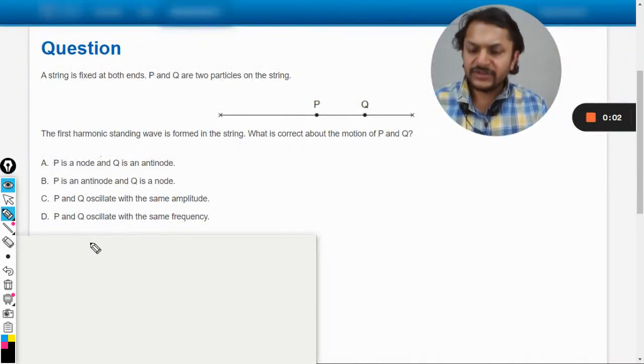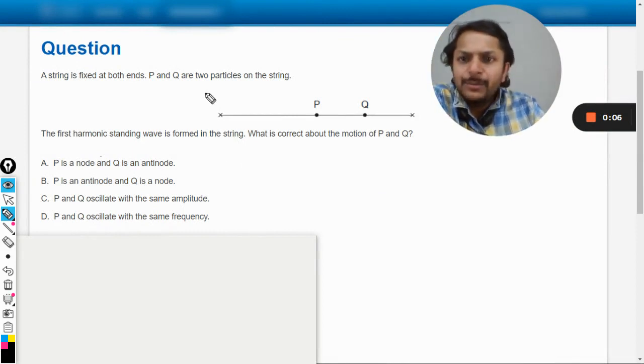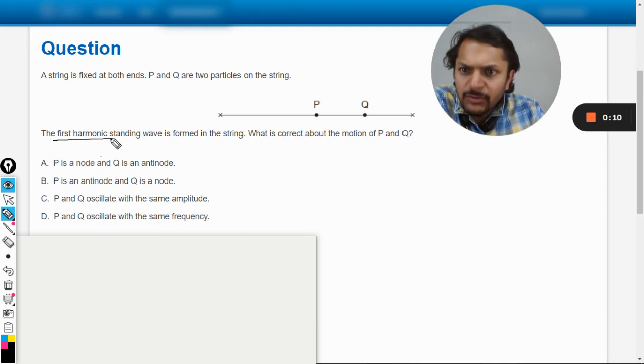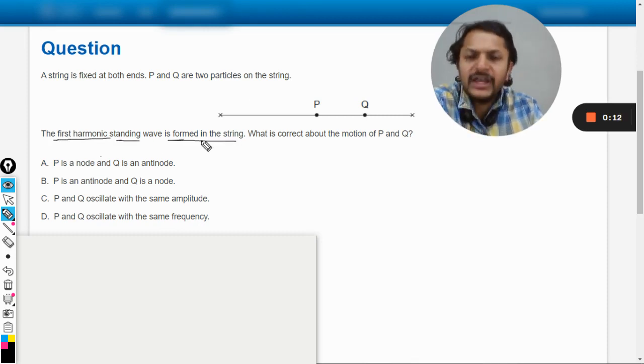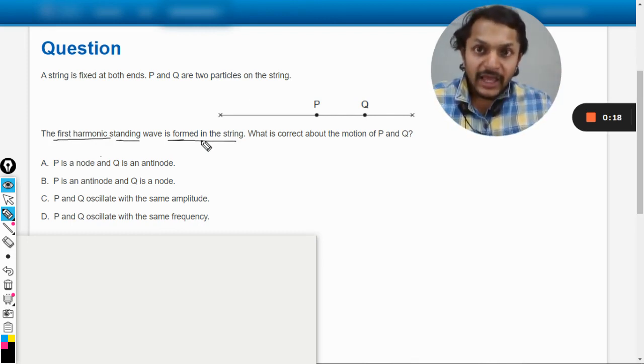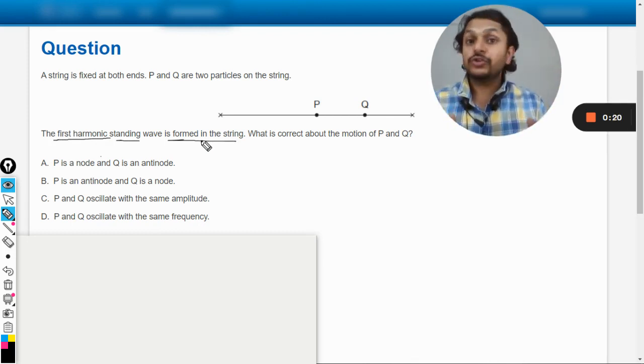Okay dear students, let us see what is there in this question. A string is fixed at both ends. P and Q are two particles on the string. The first harmonic standing wave is formed in the string. What is correct about the motion of P and Q? So if there is a string which is fixed at both of the ends...